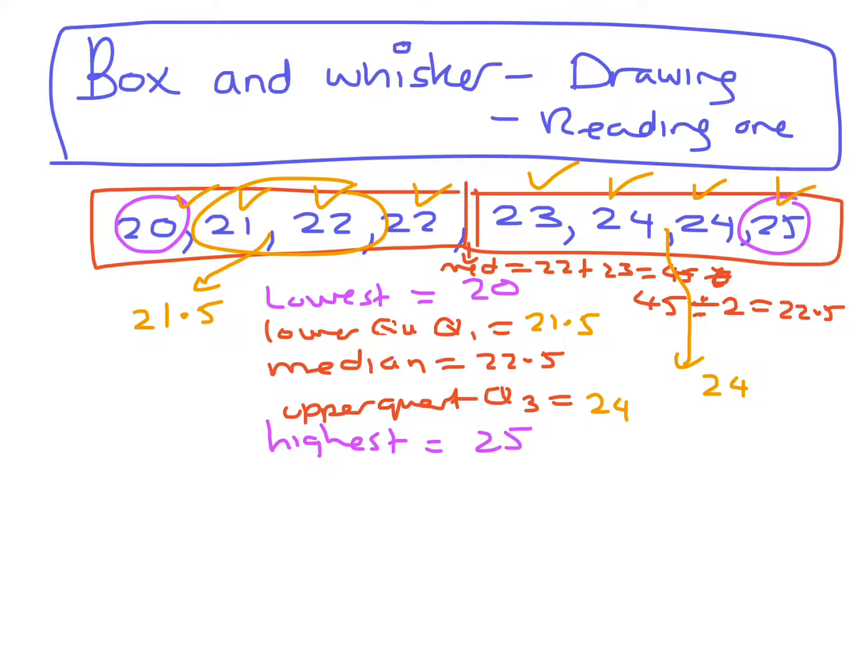Okay, so now to start on your box and whisker plot, you draw your number line. You start at your lower score, which is 20, 21, 22, 23, 24, and 25. You go to your first score, which is your 20, and you draw your line at 20. You go to your second one, 21.5. You draw a line at 21.5. Then you have 22.5, 24, and 25.